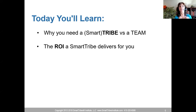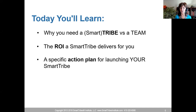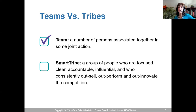We're going to go through three tracks — leadership, culture, and sales and marketing — to give you the recipe and action plan. We don't necessarily need a number of people associated together in some joint action. We need a group of people who are focused, clear, accountable, ownership-oriented, and consistently outperforming.